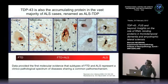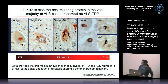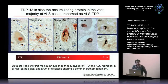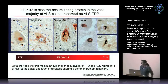We also identified TDP-43 as the protein in the vast majority of ALS cases, shown here in the motor neurons. These data were the first to provide, on a molecular basis, the evidence that frontotemporal dementia and ALS represent a clinical-pathological spectrum of diseases which most likely share a common pathogenic mechanism.